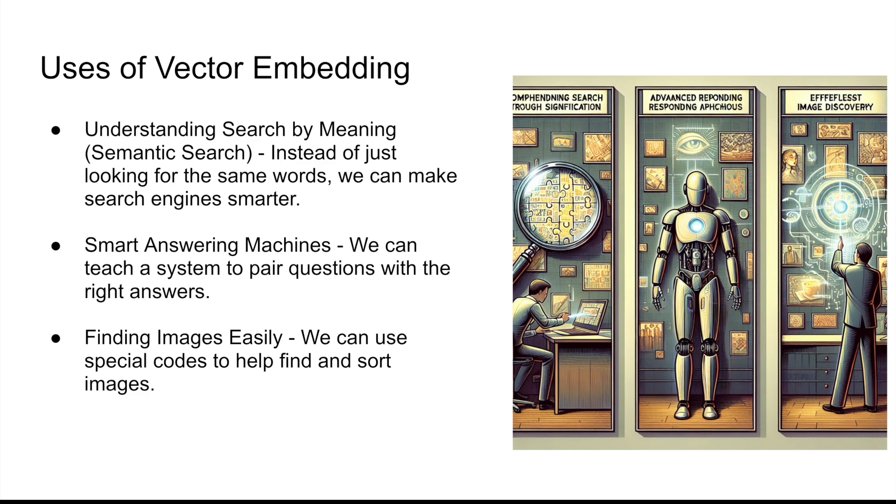The next piece of application is smart answering machines. We can teach a system to pair questions with the right answers using vector embeddings. It can thus give you answers to questions that it has never heard before. Now imagine you have images and if you want to search for images, how do you do it? We can use special codes to basically help and find images for us. Images can again be represented in form of vectors, and then searching through vectors to find out what we are looking for is again made possible because of vector embeddings.